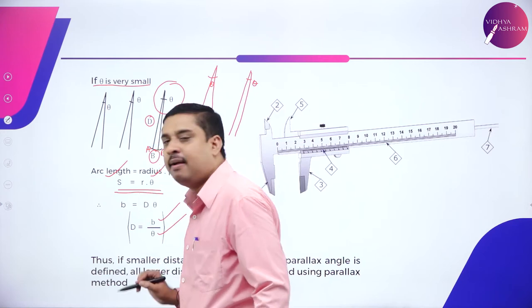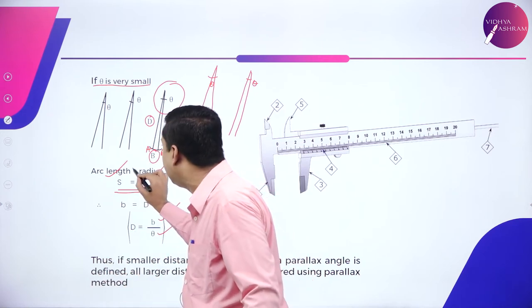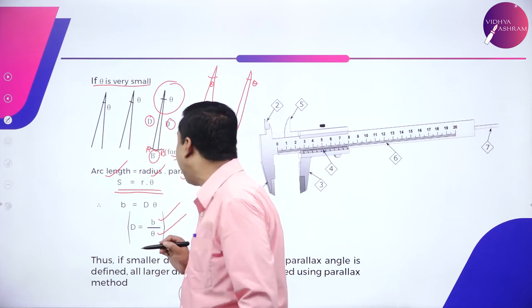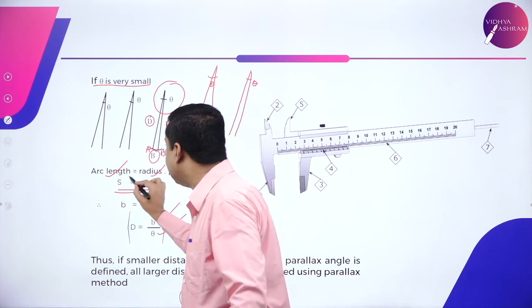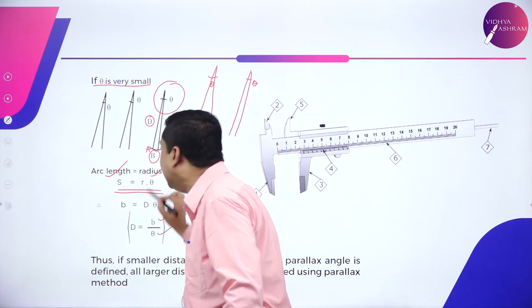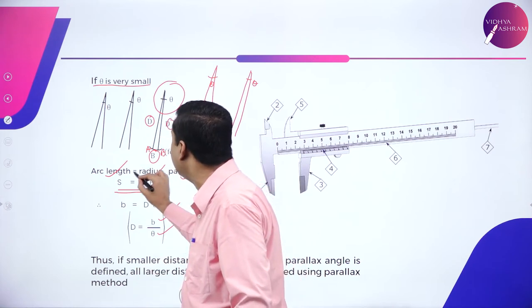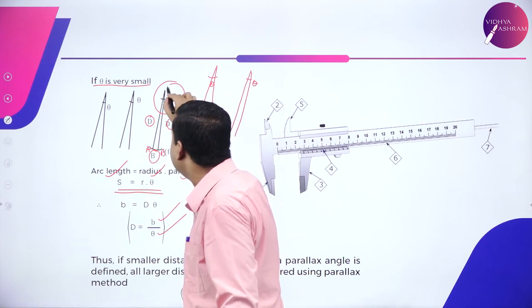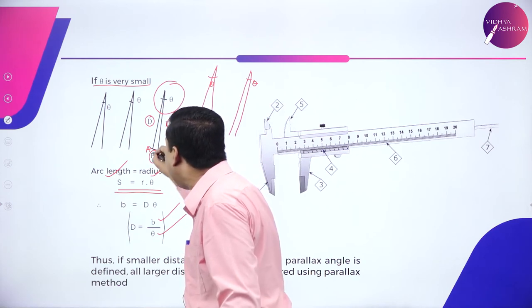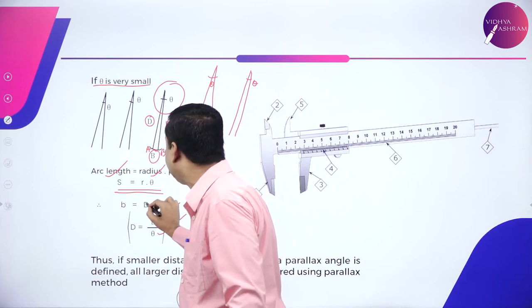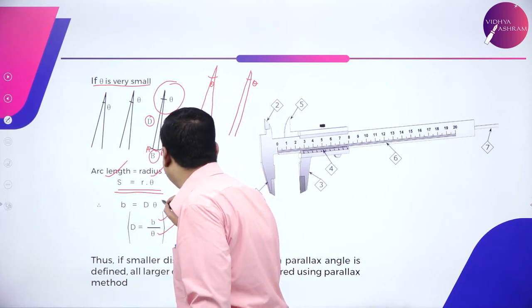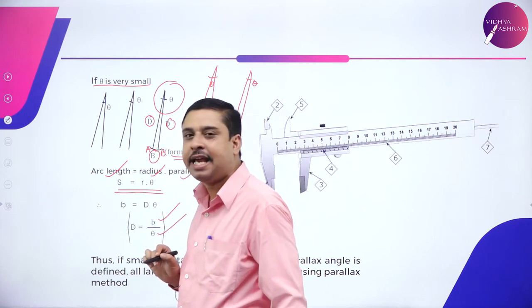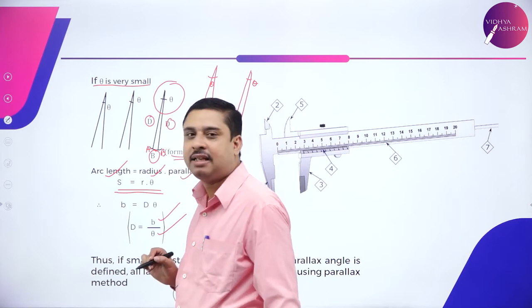Therefore, mathematically we calculate arc length equals radius into parallax angle. S is R times theta. In this particular situation, what is S? Arc length is B. What is R? The distance between the planet and the stations on the earth. Capital D. Theta is the parallax angle. Or capital D equals B divided by theta.